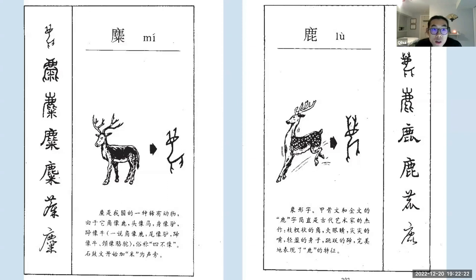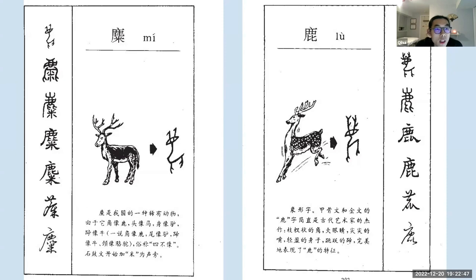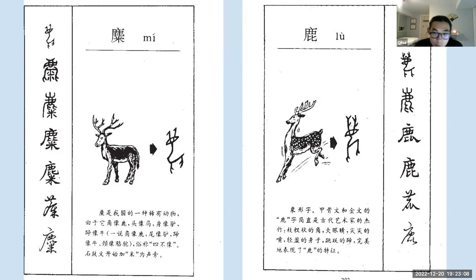Here are two images of the deer and the elk. The one on the right is the deer, called Lu in Chinese. As you can see, the character is itself an image of the deer — a very typical Chinese character. The left image is the elk, which has a phonetic indicator — the rice radical — underneath the lu character, so it reads mi. They are very similar and share one part of the character.